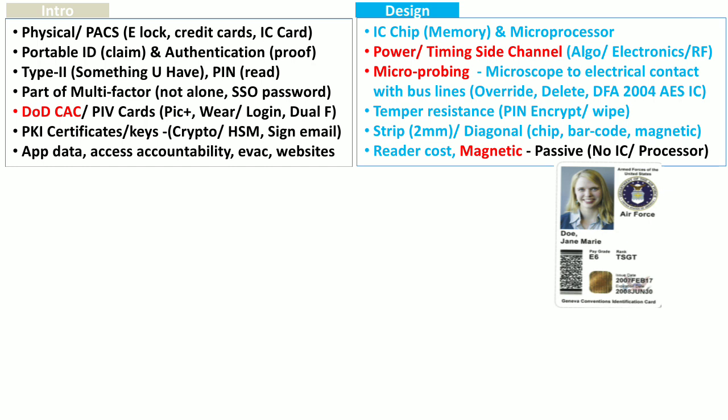A smartcard is quite an expensive solution due to the cost of the IC, processor, and smartcard reader. A magnetic card is an alternative to the smartcard because it is cheaper. It is a passive card — you can only read it and it cannot process any data because it contains no IC or processor.